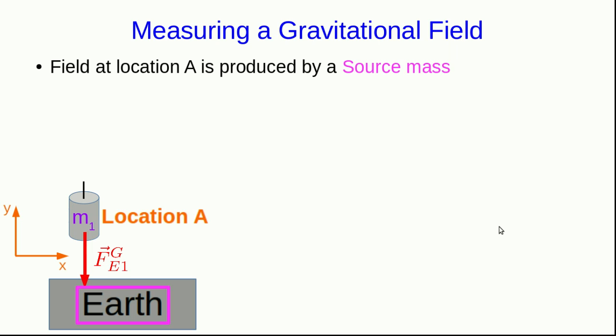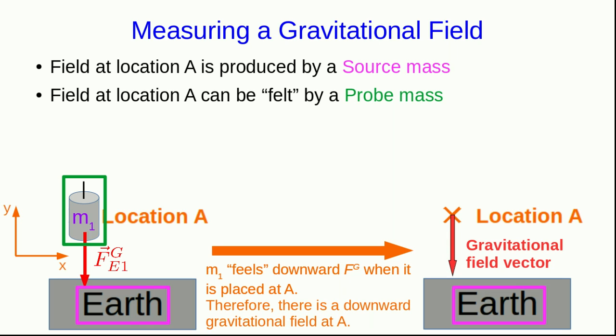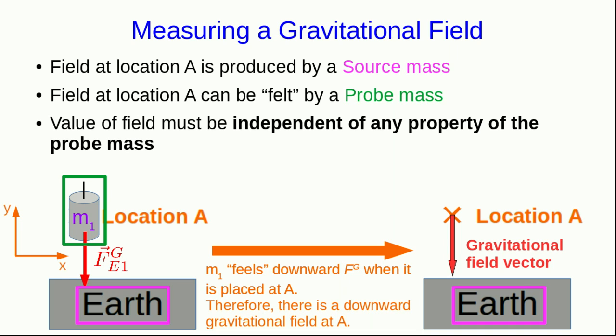This is the key idea of an interaction field. The field at any location is produced by some source, so in the case of a gravitational field it's produced by a source mass. The field can be felt by a probe, in the sense that any probe that we place at a location will feel a force which is exerted by the field. So the fact that M1 is feeling a downward gravitational force when it's at A tells us that there's a downward gravitational field vector at A. But the value of the field itself must be independent of any property of the probe that we use to measure it.